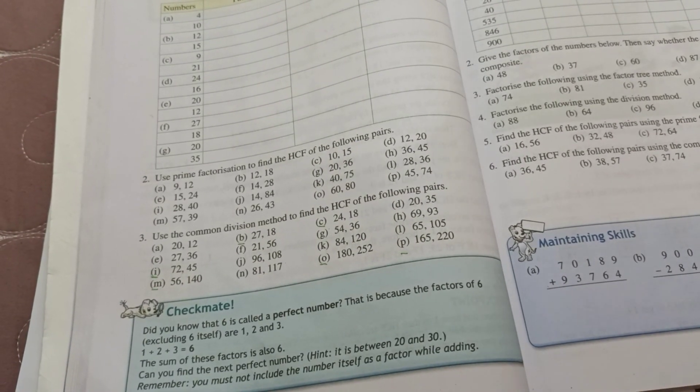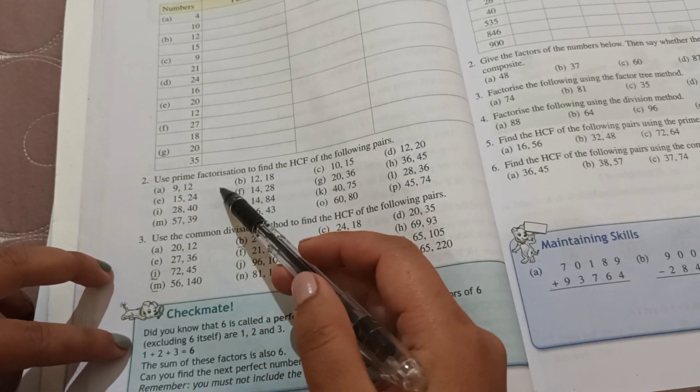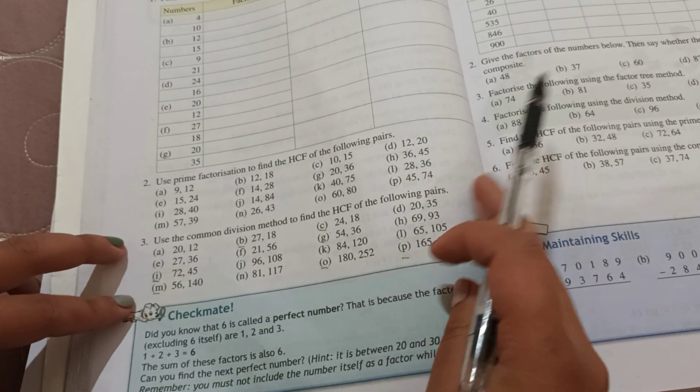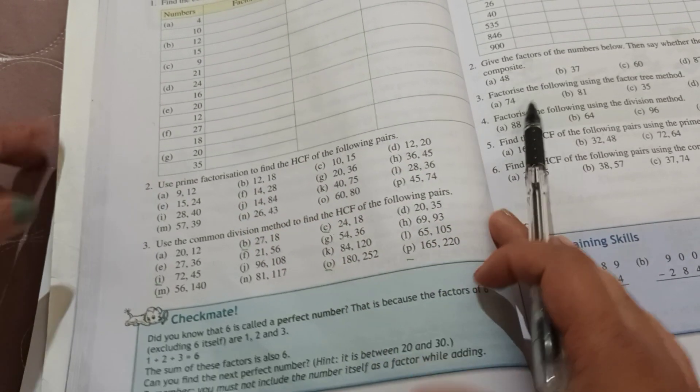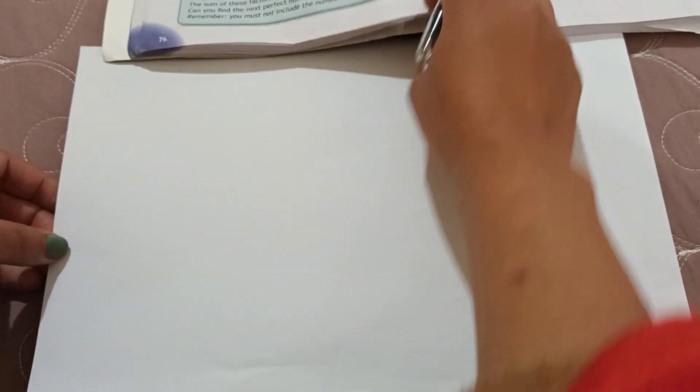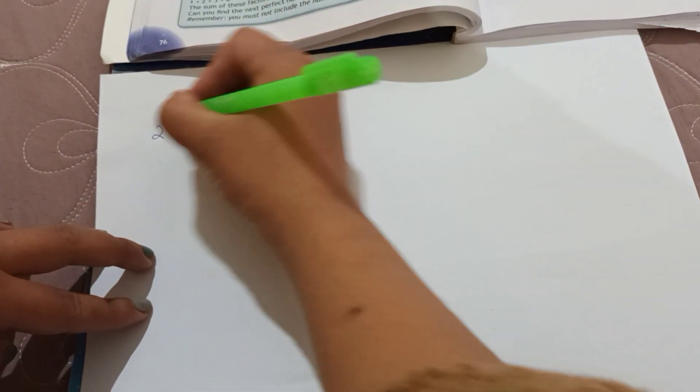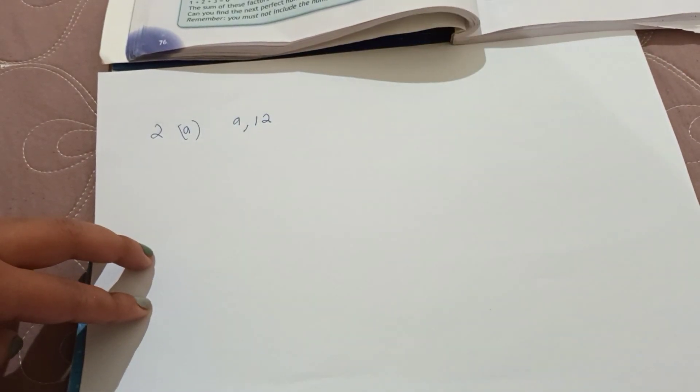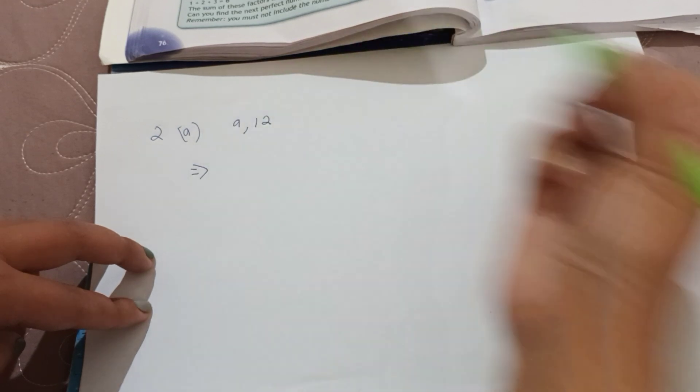Question number 2, use prime factorization to find the HCF of the following pairs. So, use prime factorization method. So, prime factorization method. Question number 2. 2a, prime factorization method. In the exam, you need to show the method.